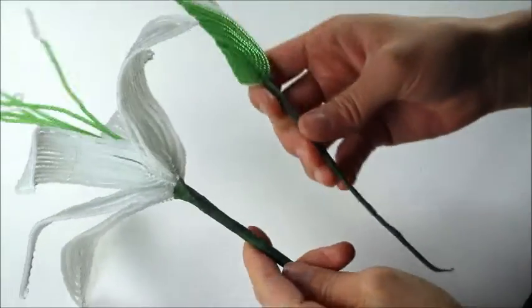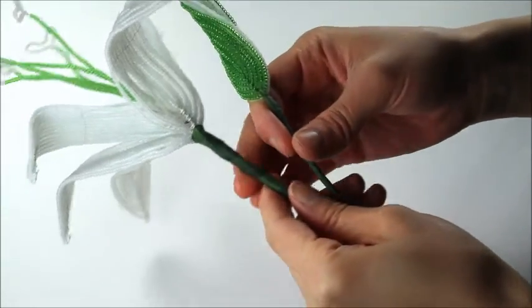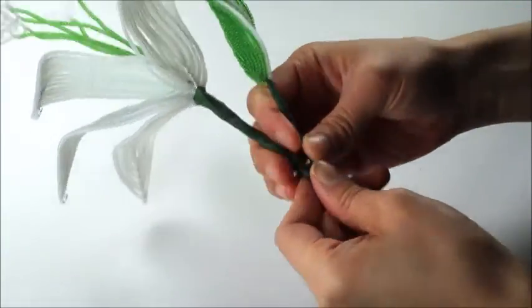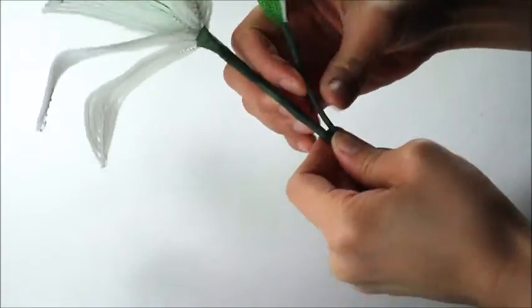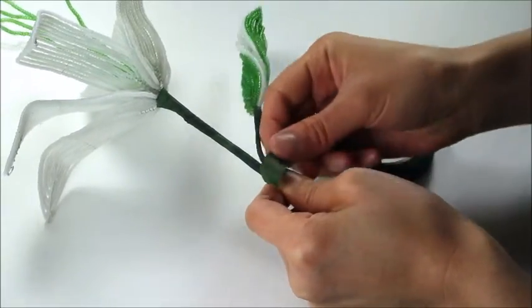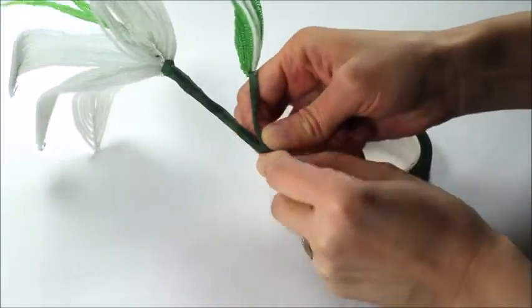Now we're going to attach the bud to the lily. So take your bud and place it wherever you want on the stem, like here. And then wrap with floral tape.